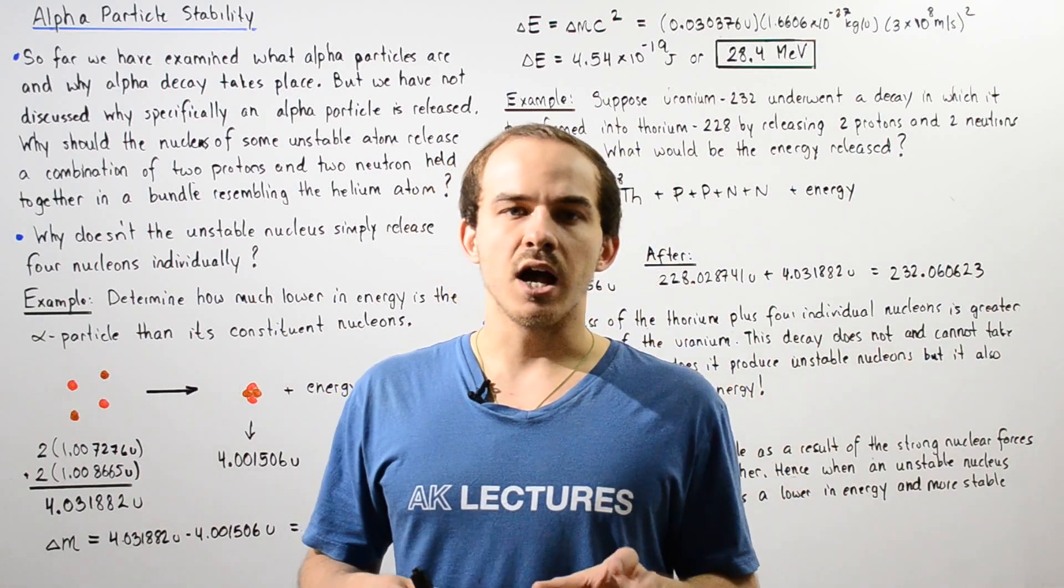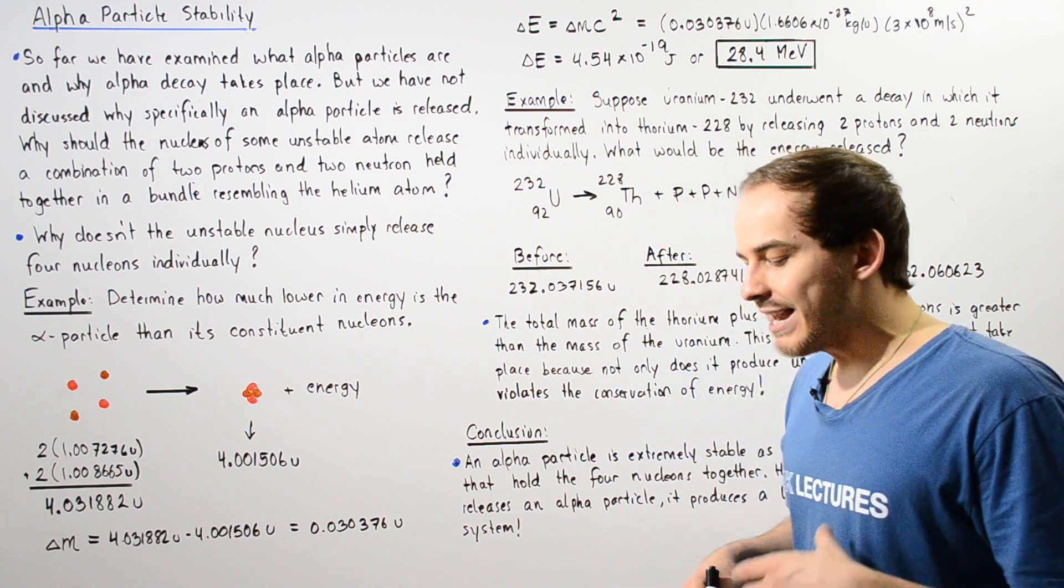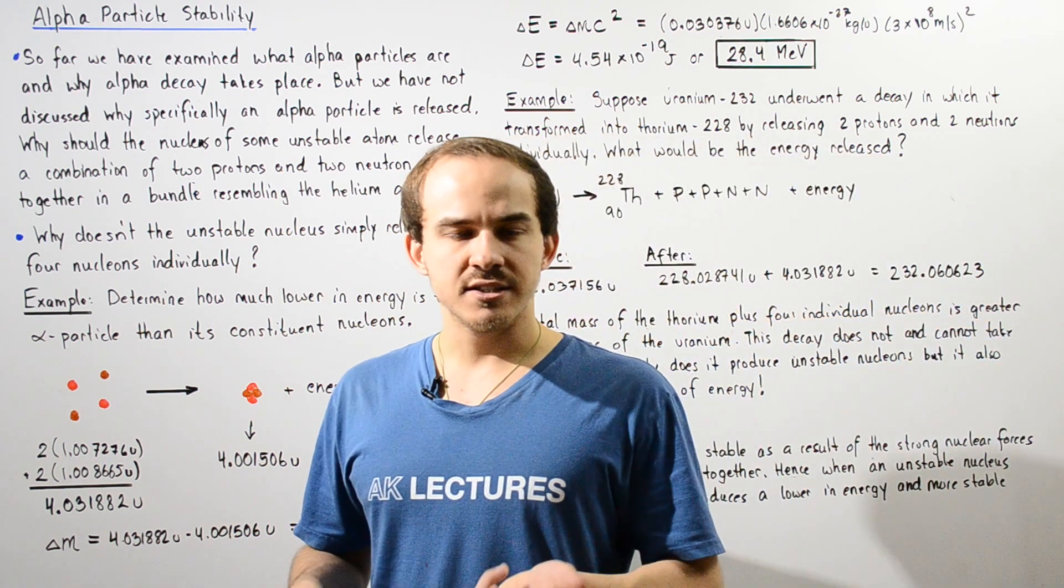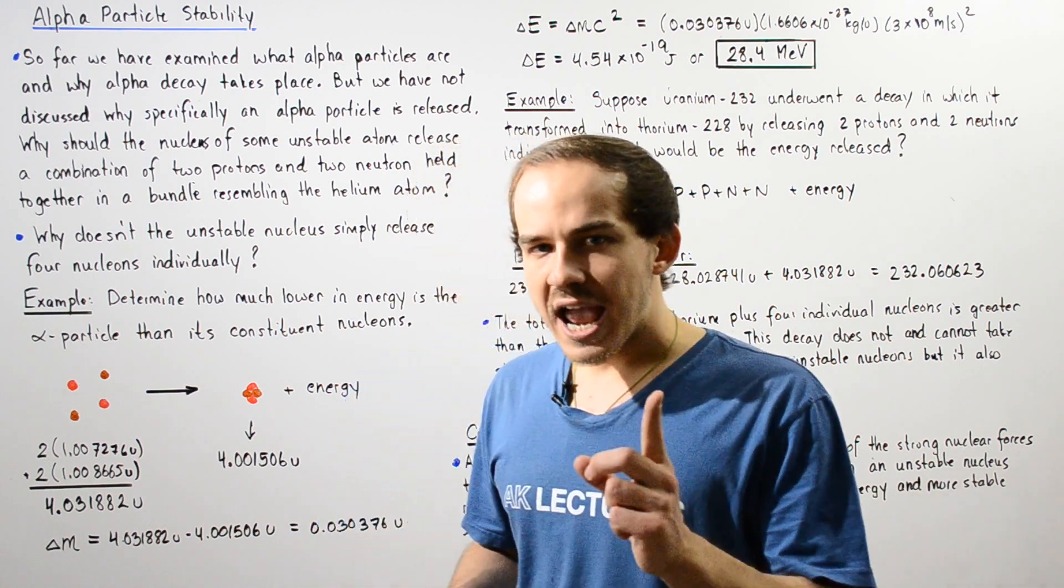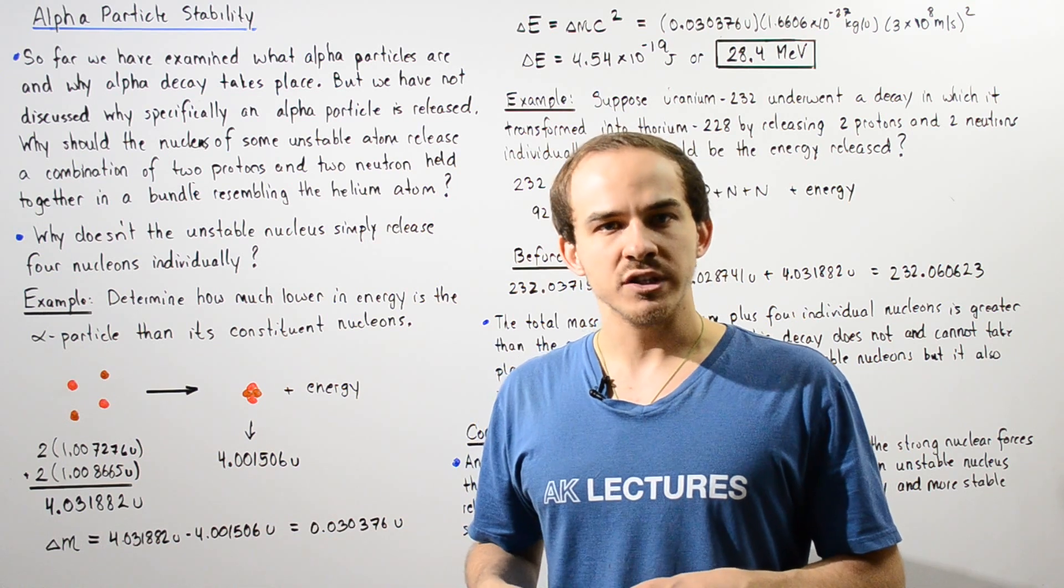Up to this point, we discussed what the radioactive alpha decay is. And we also examined what the alpha particle actually consists of. Now what we haven't discussed is why specifically an alpha particle is released.